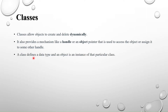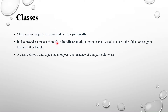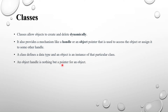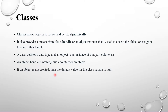A class defines a data type and an object is an instance of that class. Just like we have logic, structures, unions, and enums, a class is also a user-defined data type. For example, writing 'transaction t1' means t1 is an instance of the transaction class. A handle is a pointer to an object — we use it to access methods and data, such as 't1.data'.